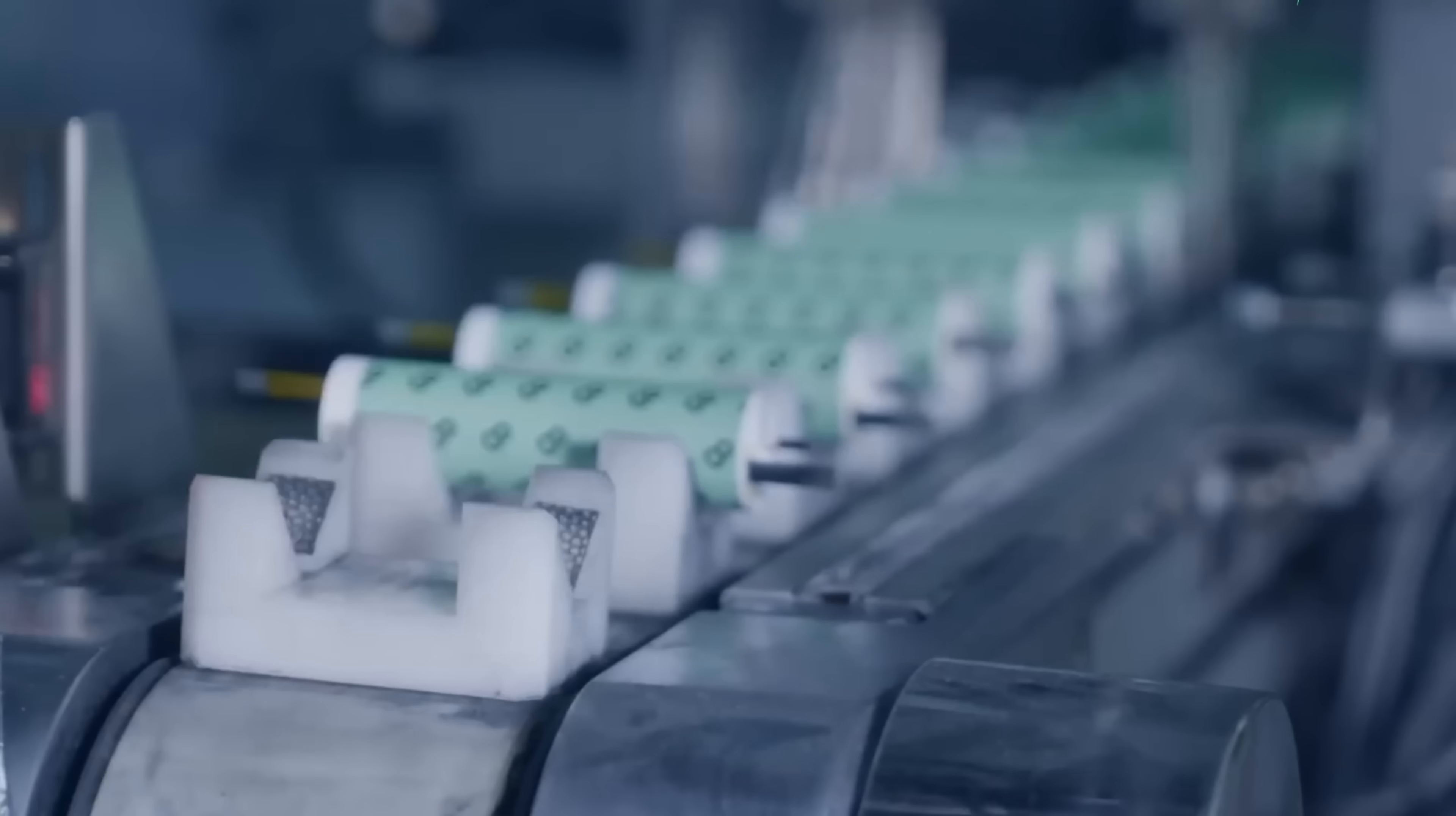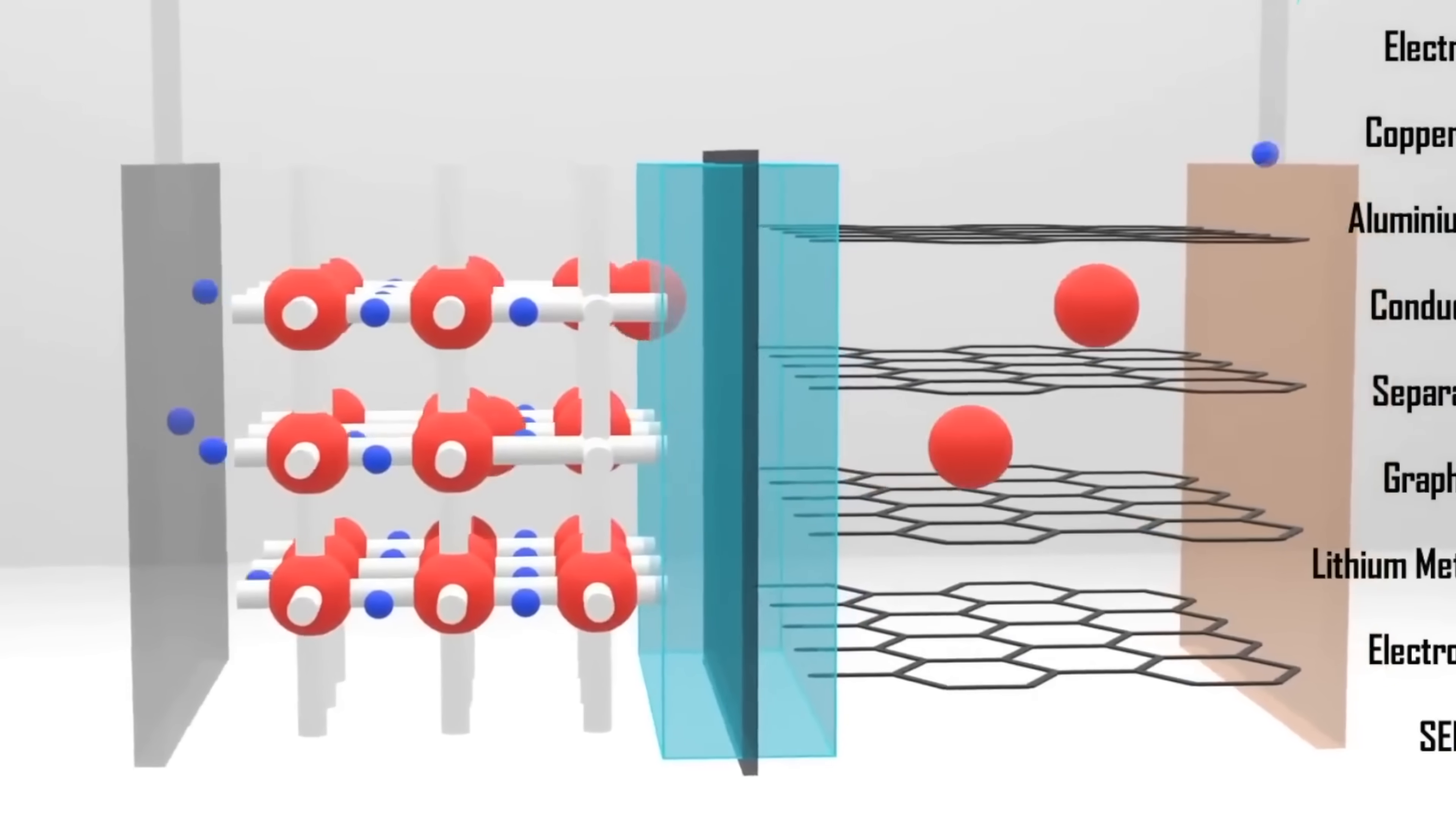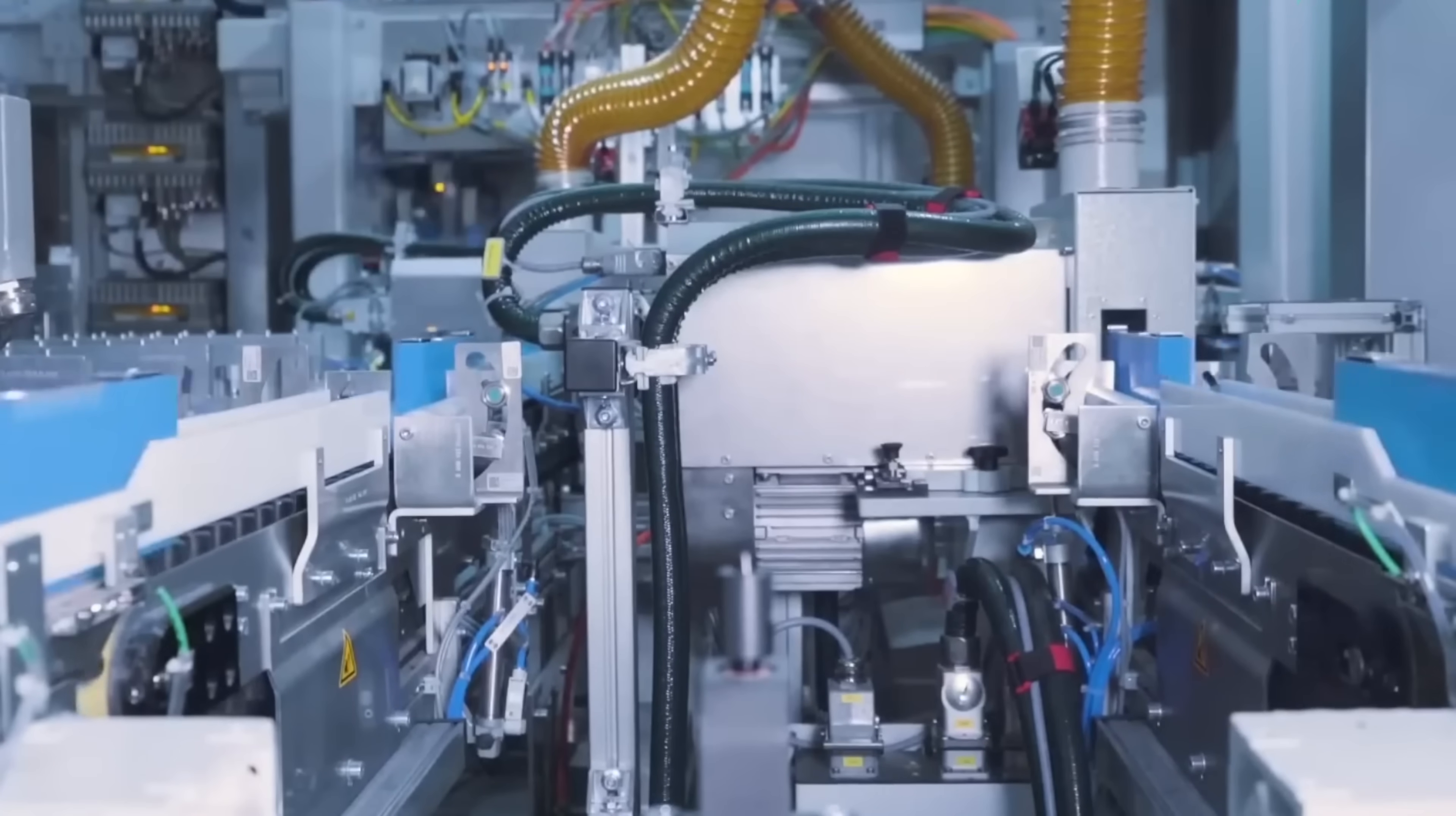That could almost double the energy density. Not the chemistry, just the packaging. Which means, in theory, you could build a mid-size SUV with a normal-sized battery pack that goes 1,200 or 1,300 kilometers on a charge, maybe 1,500 or 1,600 in some of the bigger ones. That's twice what most long-range EVs can do today at the end of 2025.